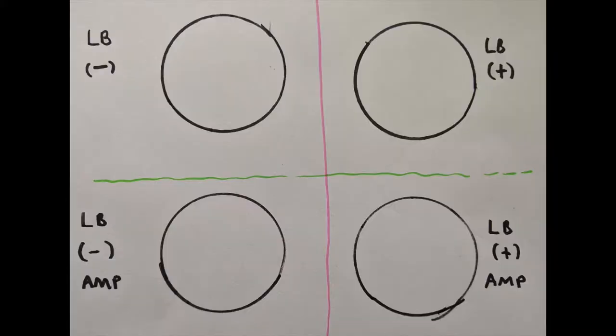The genes we're using are ampicillin resistance and a glow marker gene. The tests we're using are LB minus, LB plus, LB minus AMP, and LB plus AMP. Now let's get into how we get the bacteria ready and how we actually get the DNA into the test group.